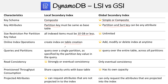For queries and partitions, the LSI queries over a single partition as specified by the partition key value in the query. For GSIs, it queries over the entire table, or across all partitions. For read consistency, LSI supports strongly or eventual consistency — so LSIs win over GSIs in this one case, where GSI only supports eventual consistency.